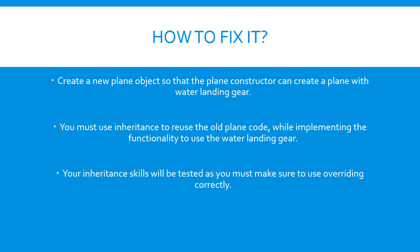With a system as large as the plane constructor, it wouldn't be possible to actually go into the source code and change the properties of an existing plane to use water landing gear, and this is a scenario that you'll probably encounter a lot if you're doing OOP programming.